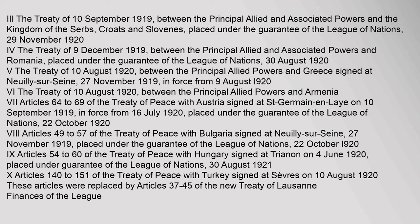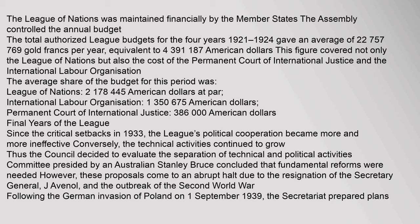The League of Nations was maintained financially by the member states; the Assembly controlled the annual budget. The total authorized League budgets for the four years 1921–1924 gave an average of 22,757,769 gold francs per year, equivalent to 4,391,187 American dollars. This figure covered not only the League of Nations but also the cost of the Permanent Court of International Justice and the International Labour Organization. The average share of the budget was: League of Nations — 2,178,445 American dollars; International Labour Organization — 1,350,675 American dollars; Permanent Court of International Justice — 386,000 American dollars.